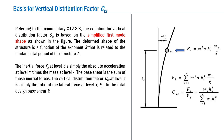Let us first discuss how the equation for the vertical distribution factor CVX is evolved. Referring to the commentary of the code, section C12.8.3, the equation for CVX is based on the simplified first mode shape shown here. The deformed shape of the structure at any position HX is written as alpha times HX raised to K, which implies that the exponent K readily defines the shape of the first mode relevant to the structure.